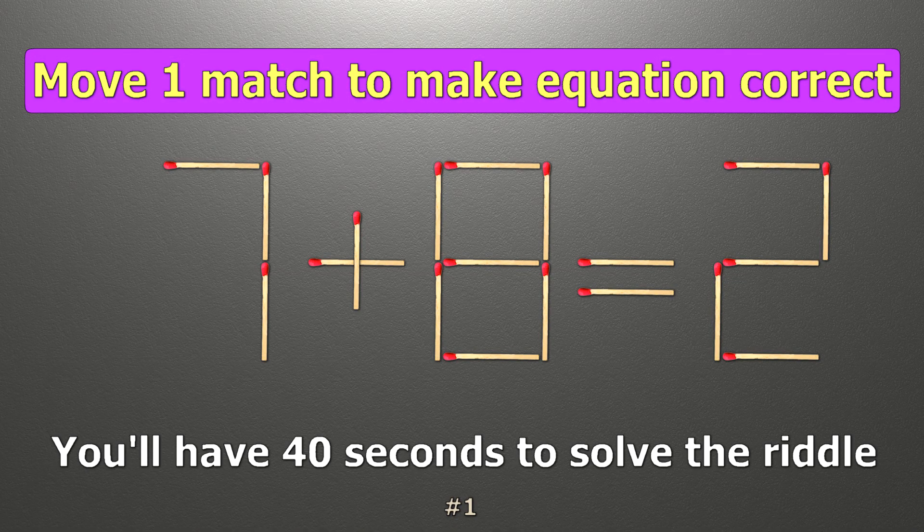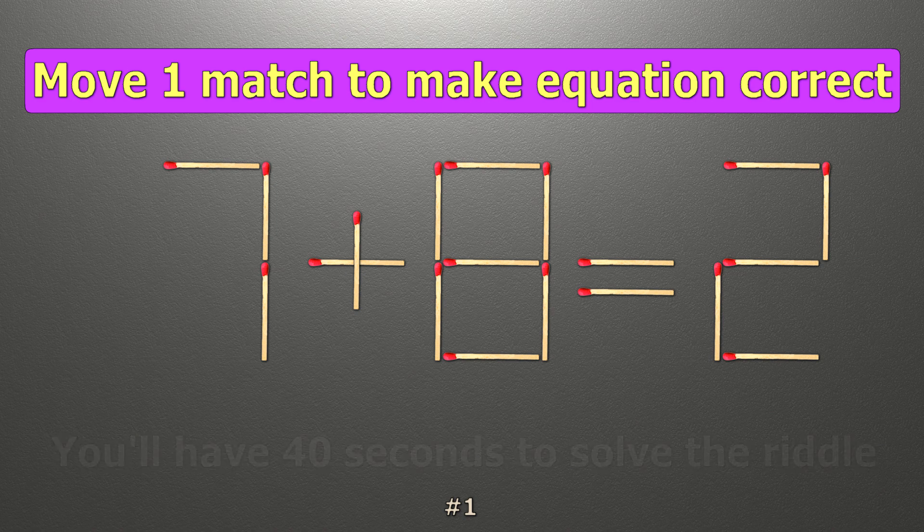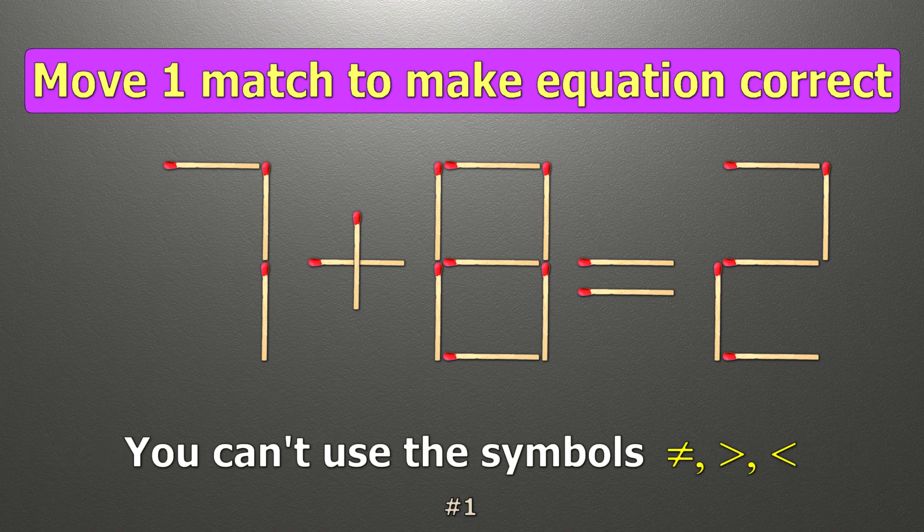We have the equality 7 plus 8 equals 2. Our equality is wrong. We need to move one match to make our equality correct.